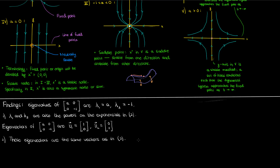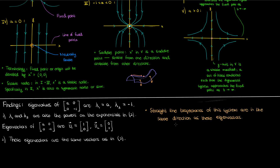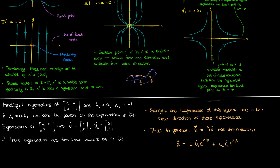I won't calculate the eigenvectors here, but I'll show you another example later in the video. The other thing to note is that the straight-line trajectories are in the same direction as these eigenvectors. Putting these findings together, for a general linear dynamical system with coefficient matrix A, the solution x is a linear combination of the two eigenvectors of A, each multiplied by an exponential whose power involves the corresponding eigenvalue. Here c1 and c2 are constants determined by the initial condition.